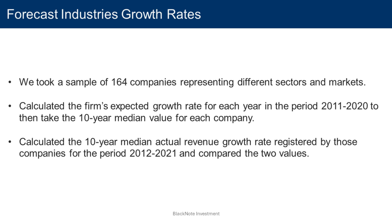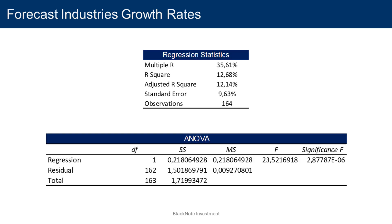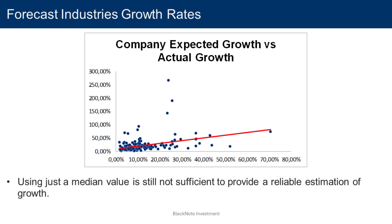I took a sample of 164 companies representing different sectors and markets, and calculated the firm's expected growth rate for each year in the period 2011–2020, then took the 10-year median value for each company. I then calculated the 10-year median actual revenue growth rate for the period 2012–2021 and compared the two values. Despite a positive statistically significant correlation, the R-squared is very low and the standard error is a whopping 9.6 percent — meaning an expected growth rate of 10 percent can fluctuate between 0.4 percent and 19.6 percent. Therefore, using just a median value is still not sufficient to provide a reliable estimation of growth.